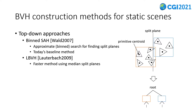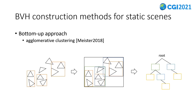LBVH uses median split planes. It enables faster construction, but the tree quality is a little bit lower. More recently, a bottom-up approach using agglomerative clustering has been proposed. For GPU implementation, it is considered that this approach is more efficient. In this approach, starting from individual primitives, a pair of primitives close to each other are merged into a cluster. Such clusters are further merged into larger clusters, and finally the hierarchy of clusters is constructed.